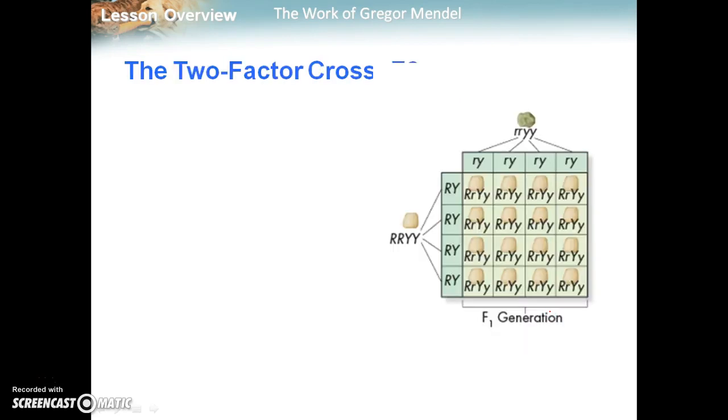The same thing can happen during a two-factor cross if we're looking at two separate genes, two separate factors. Those factors are not going to play a role in which allele goes where. The alleles are going to segregate independent of one another. And what he called this principle was the principle of independent assortment.